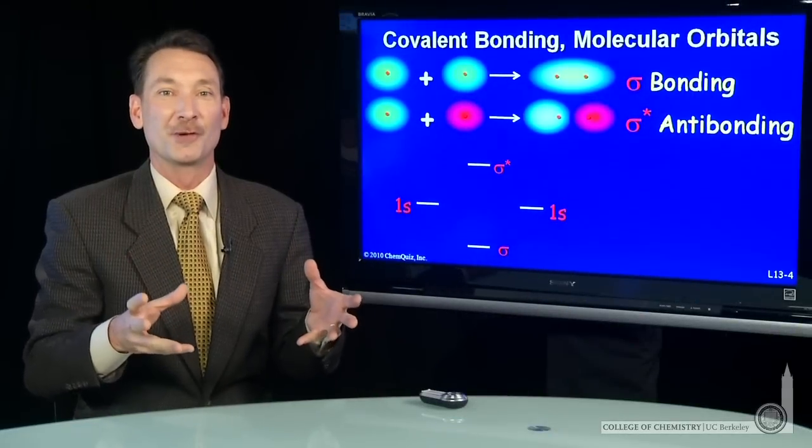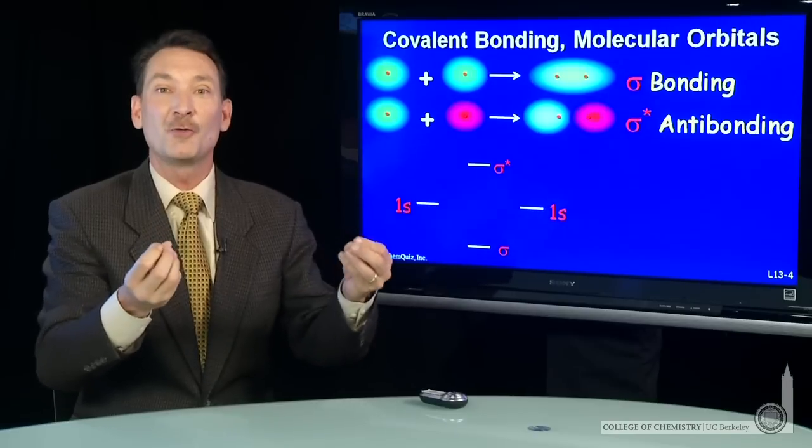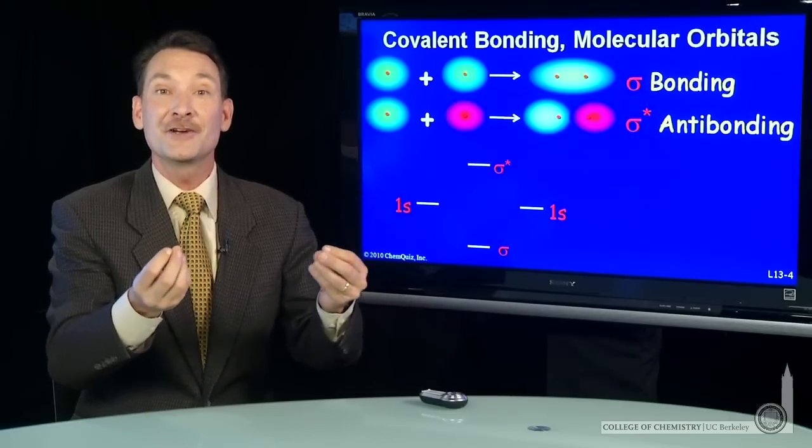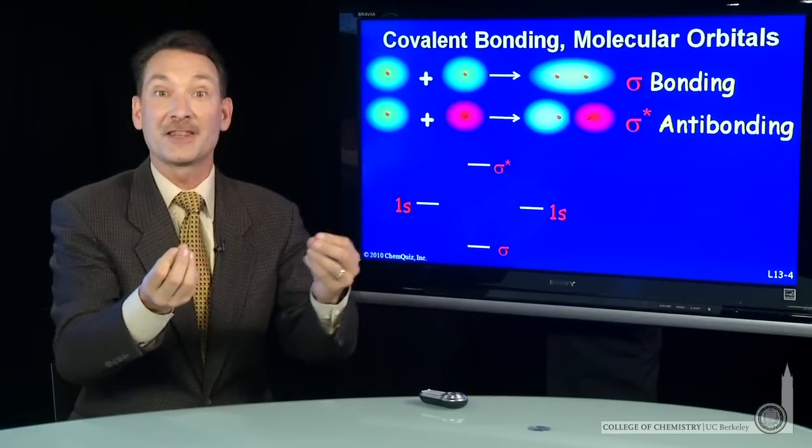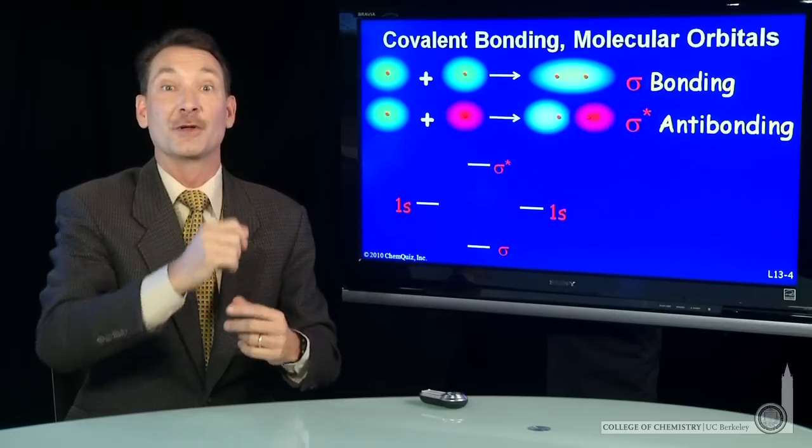When we make molecular orbitals from atomic orbitals, we take the atomic orbital wave functions and use linear combinations. We add and subtract them with constant coefficients to make molecular orbitals.